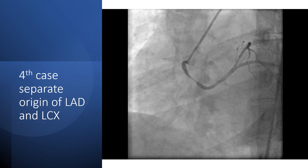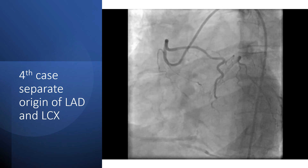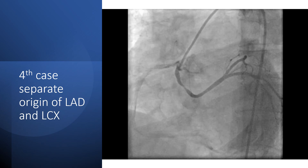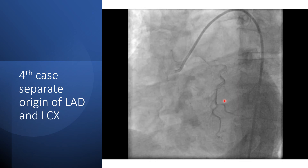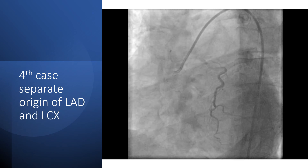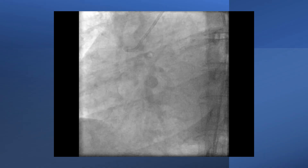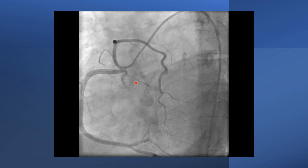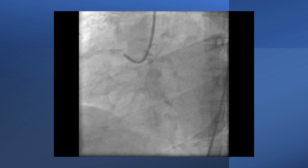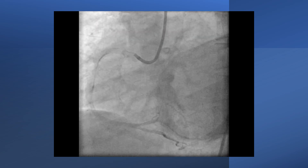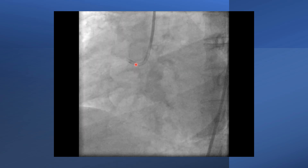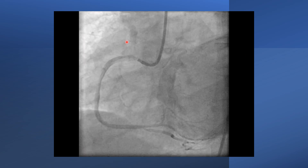In another case of left main from the right, the circumflex and the LAD have separate origins. This is the circumflex, and here is the LAD. This is the same case with selective engagement of the LAD. In this view, we can see all three arteries: the RCA, the circumflex, and the LAD.